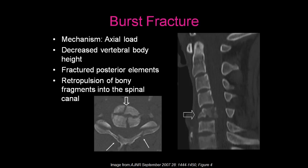A burst fracture results from an axial load, resulting in decreased vertebral body height as well as fractured posterior elements. You can even see retropulsion of bony fragments into the spinal canal. This is a very important sign because these fragments can result in injury to the cervical spinal cord.